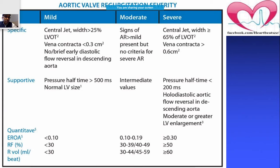Now, aortic valve regurgitation — how do you assess its severity? Like the others, it has three grades: mild, moderate, and severe. Mild is when the regurgitant jet occupies nearly 25% of the LVOT area; moderate is more than mild but less than severe; severe is when it is more than 65% of the LVOT.